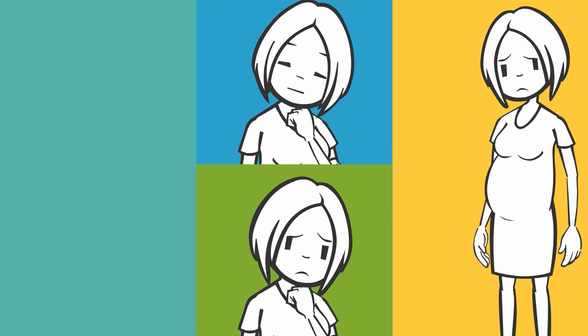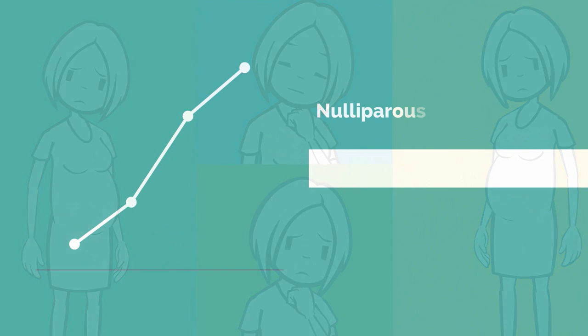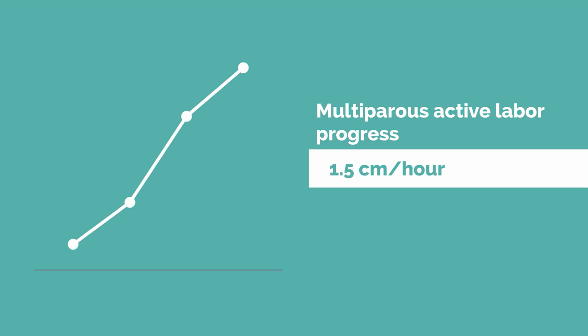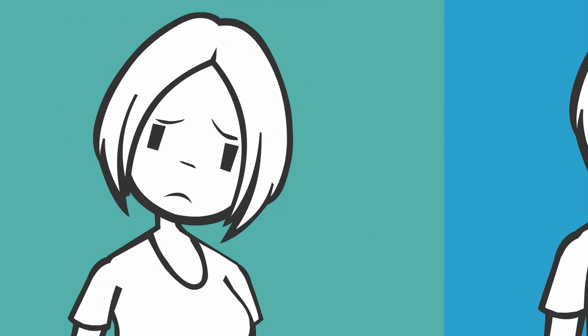She was admitted to labor and delivery in active labor at 5 centimeters dilated and she's been having regular painful contractions for 2 hours. Since she is a Gravida 1 Para 0 in active labor, her cervix is expected to dilate at approximately 1.2 centimeters per hour. A multiparous patient in active labor should have progression of approximately 1.5 centimeters per hour. After 2 hours when we recheck Labora's cervix, it is unchanged and is still 5 centimeters dilated.